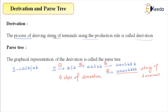The second definition is the parse tree. The graphical representation of a derivation is called the parse tree. Let me represent this derivation graphically for this context-free grammar.